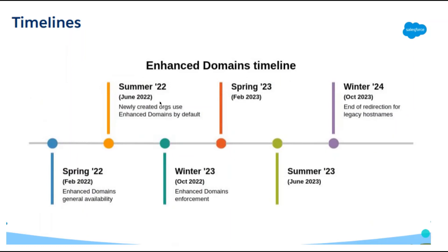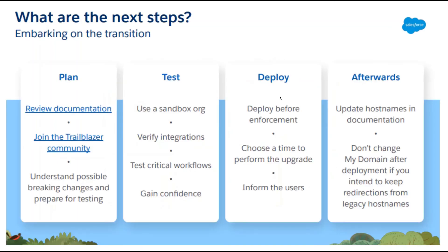Timeline: Summer 2022 — newly created orgs use enhanced domains by default. Spring '23 — the same. Winter '24 — end of redirection from legacy hostnames. Spring '22 — enhanced domain general availability. Winter '23 — enhanced domain enforcement. You need to plan, test, and deploy: use a sandbox, deploy before enforcement, update hostnames in documentation, verify integrations, and test critical workflows.